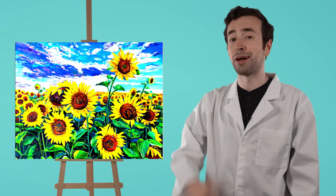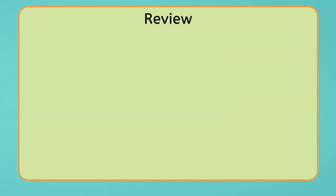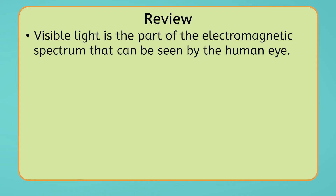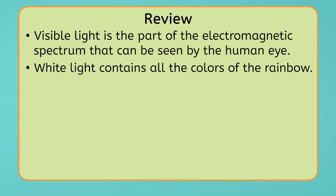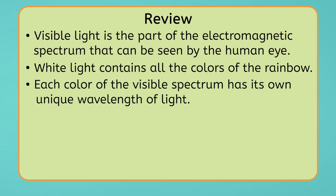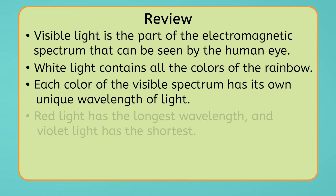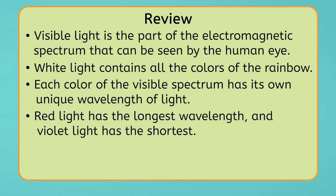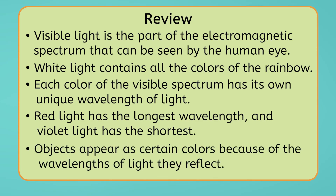Let's review everything we've learned today. Visible light is the part of the electromagnetic spectrum that can be seen by the human eye. White light contains all the colors of the rainbow. Each color of the visible spectrum has its own unique wavelength of light. Red light has the longest wavelength, and violet light has the shortest. Objects appear as certain colors because of the wavelengths of light they reflect.